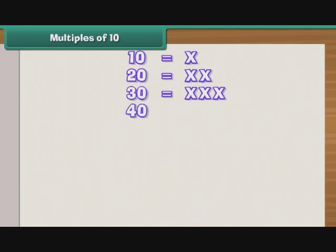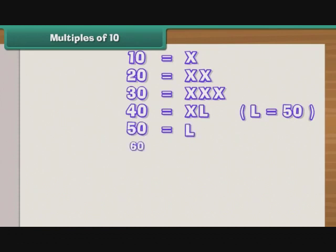40 is read as 10 less than 50. Hence, it is written as XL, where L stands for 50, and 50 is L. Similarly, 60 is 50 plus 10, that is LX.